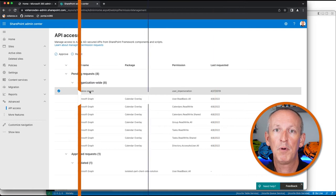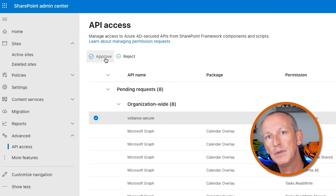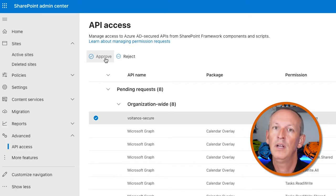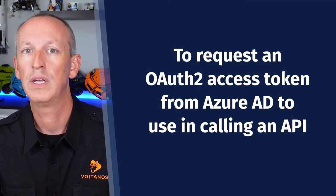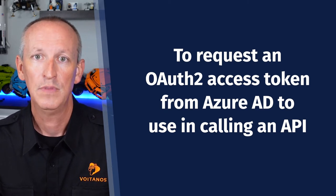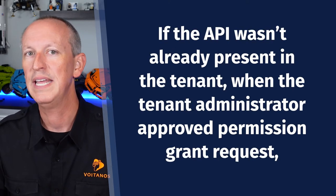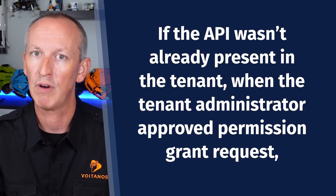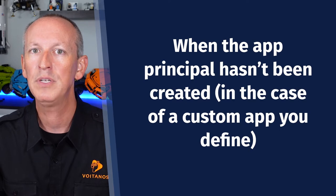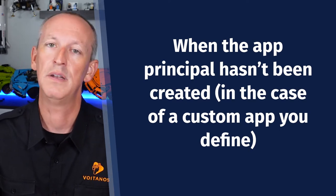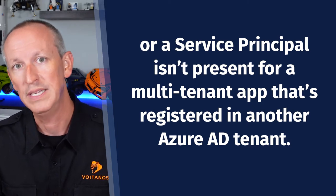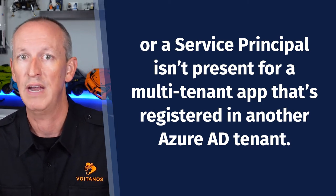For this first one, it's easiest to understand how things work before you can appreciate what Microsoft added in SharePoint Framework version 1.15.2. Administrators can approve permission grant requests for APIs to SharePoint Online, and this enables an SPFx component to request an OAuth 2 access token from Azure Active Directory to use in calling an API, such as Microsoft Graph or some other endpoint. Previously, if the API wasn't already present in the tenant when the tenant administrator approved the permission grant request, it would throw an error. This can happen when the app principal hasn't been created in the case of a custom app, or a service principal isn't present in the case of a multi-tenant app registered in another Azure AD tenant.